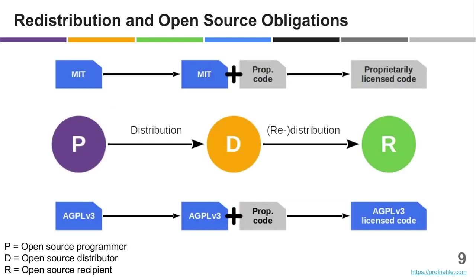The AGPL license is from the family of copyleft licenses. Simplifying, there are two categories or families of licenses: permissive licenses and copyleft licenses. This relates to the obligations you put on users as they receive some open source code.